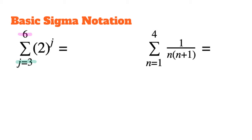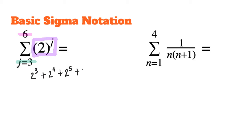So I am going to plug in the numbers 3 all the way until I get to 6, meaning I also plug in 4 and 5. The argument — the expression we are working with — tells us what we need to be adding, or how we use the 3 and the 6. So I take 2 raised to the 3rd power, add 2 to the 4th, add 2 to the 5th, and add 2 to the 6th — that is where I stop.